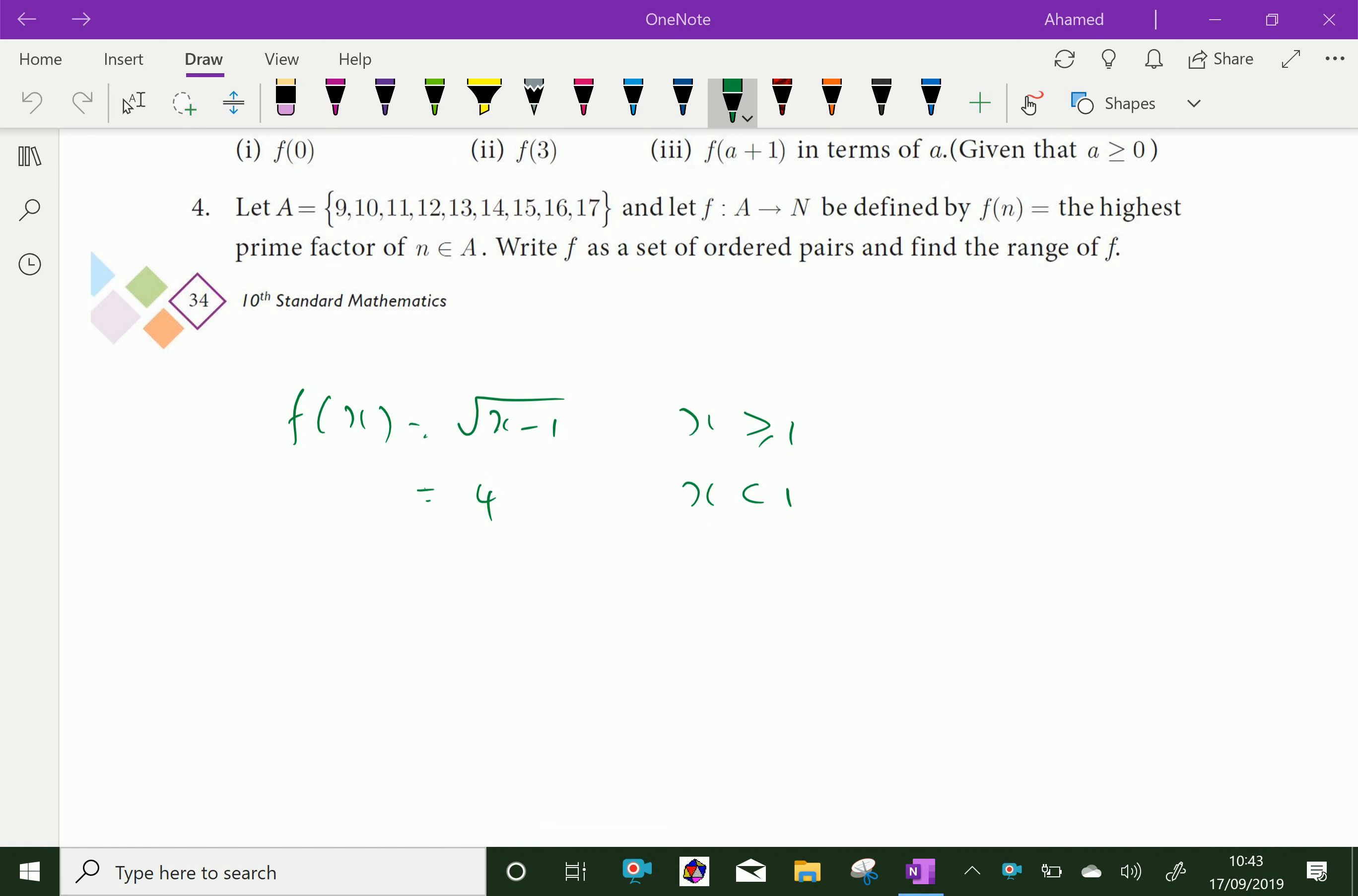Now first you have to find f of 0. Here 0 falls in the x less than 1 case, therefore f of 0 equals 4.